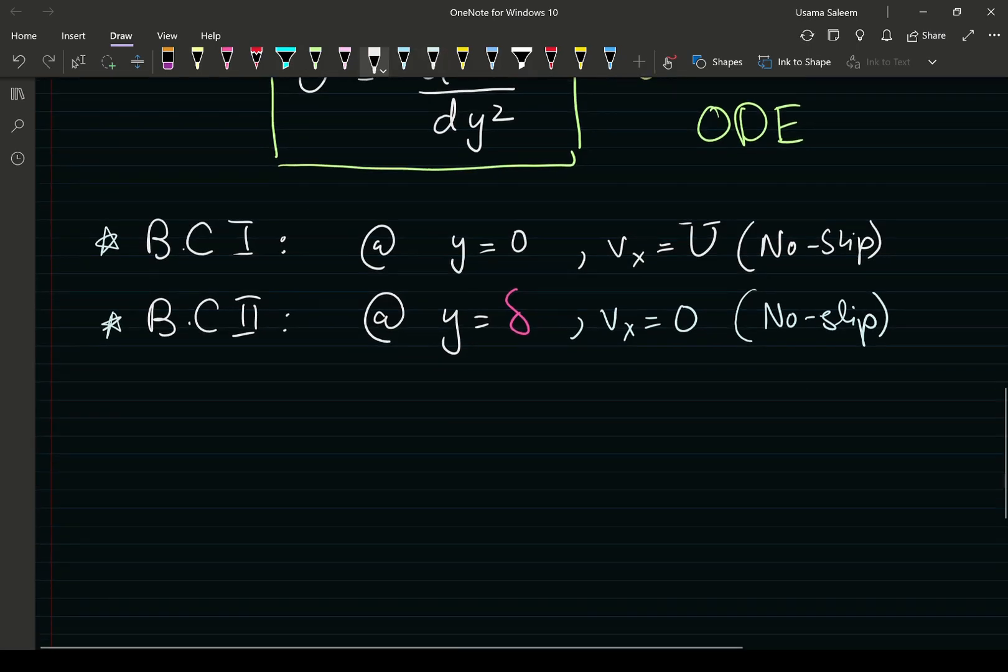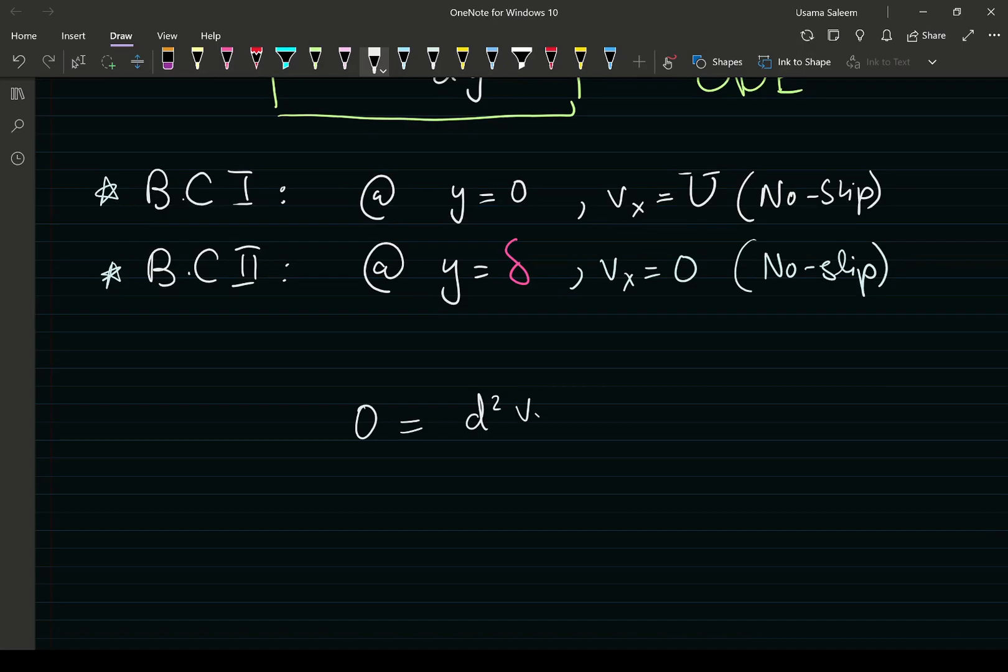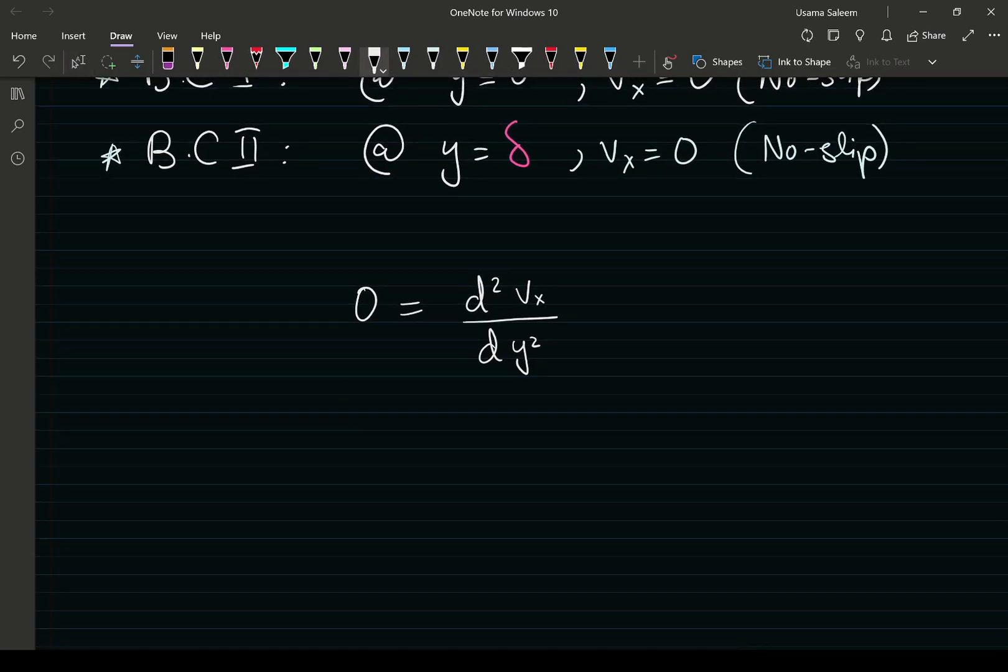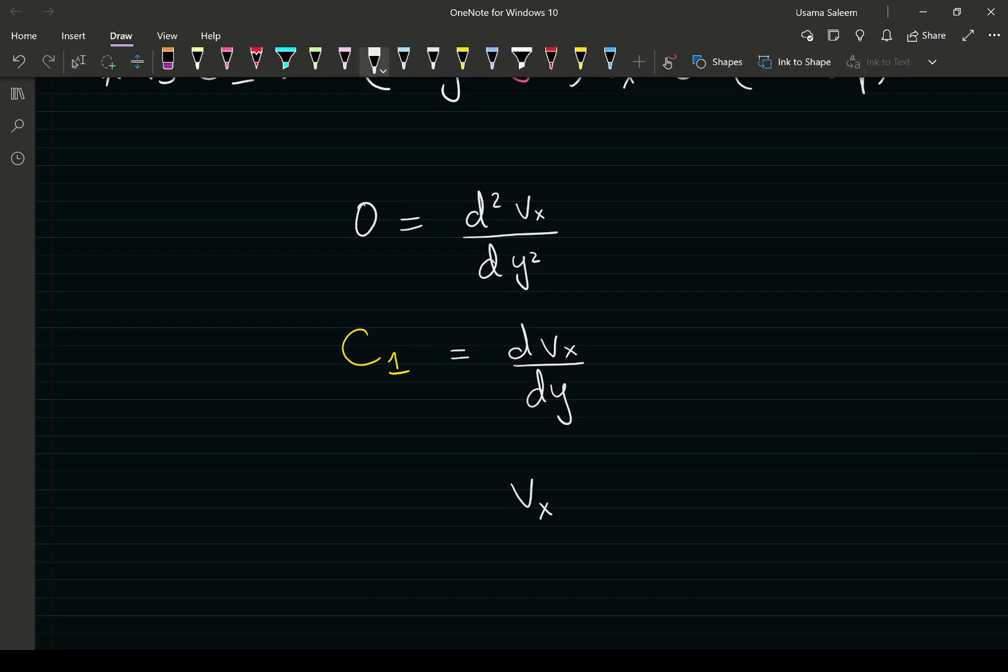Taking our ordinary differential equation, zero equals the second derivative of velocity in x. First integration gives C1 equals dv_x/dy. Second integration gives velocity in x as a function of y equals C1 times y plus C2.